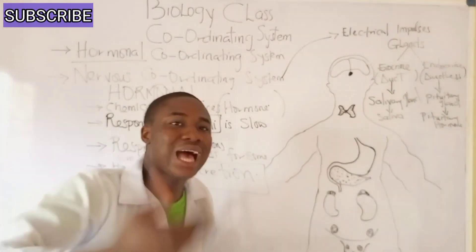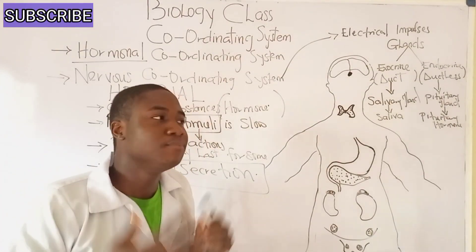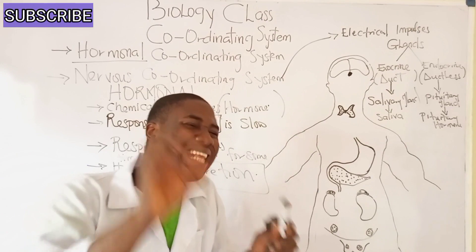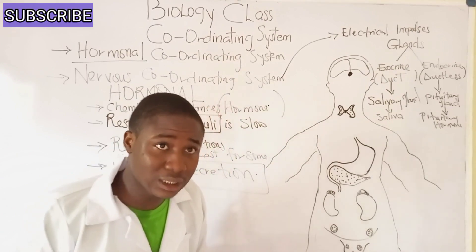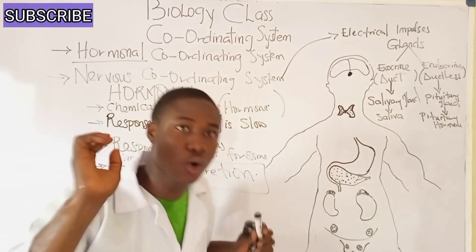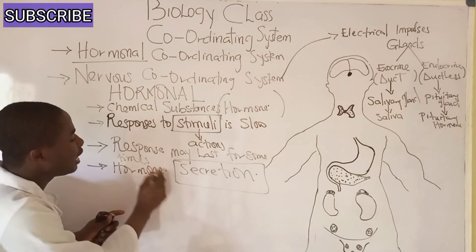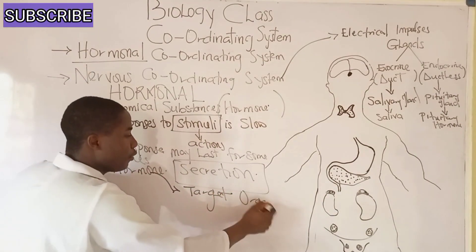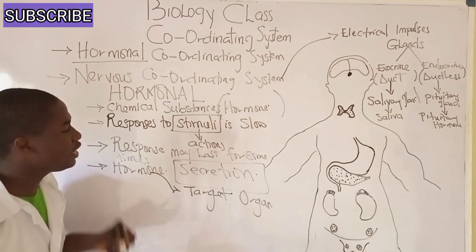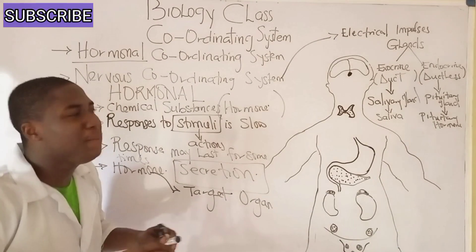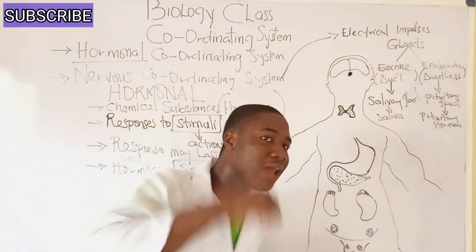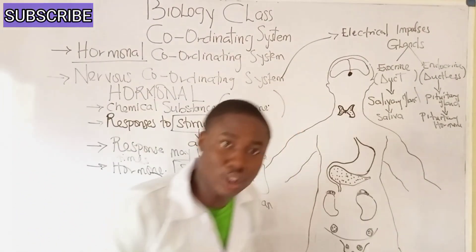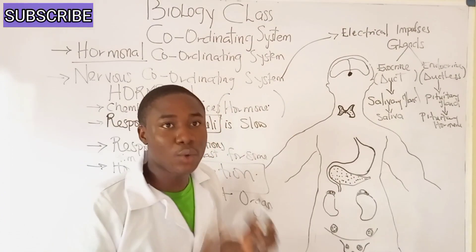Hormones are chemical substances that are released directly into the bloodstream to certain organs in the body called target organs. So for these hormones to be secreted, they go directly into the target organ. In today's class, I'll be focusing on the endocrine gland, and a good example is the pituitary gland.